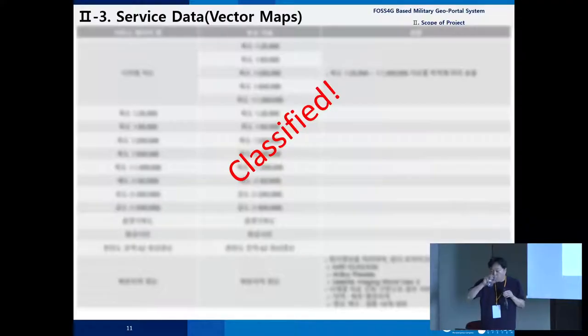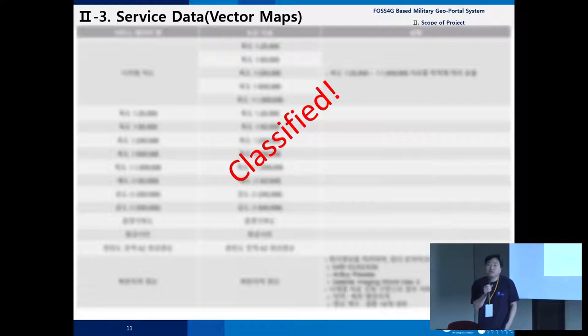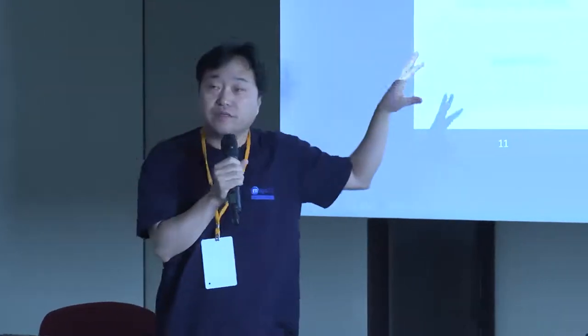Results — and this is top secret, so please do not photograph this. Around 30 terabytes of data are now being served through the web. Many vector maps are served for the army, navy, and air force. There is also a large amount of satellite imagery, drone data, and aerial photos — totaling around 30 terabytes. They also have very confidential 3D data covering South Korea and North Korea, including all building information in Pyongyang, the capital of North Korea, and other facilities.